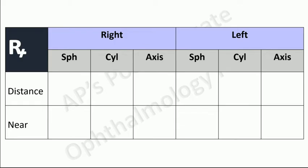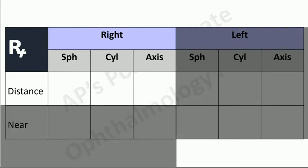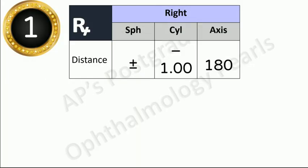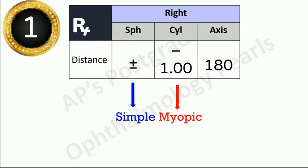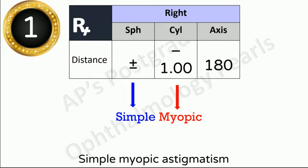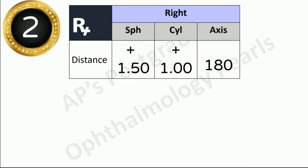This is the usual spectacle prescription. For the purpose of diagnosis, one eye is enough. Step one: a plus-minus symbol indicates zero power, so when the sphere given is zero, it is always simple astigmatism. If the cylinder is minus, it's myopic astigmatism, and if it is a plus, it is a hypermetropic astigmatism. So this is a case of simple myopic astigmatism.